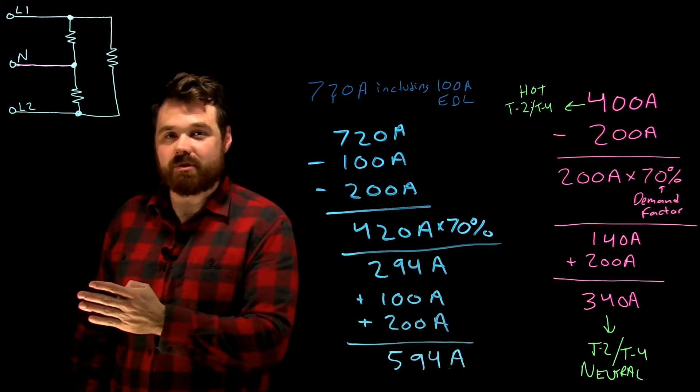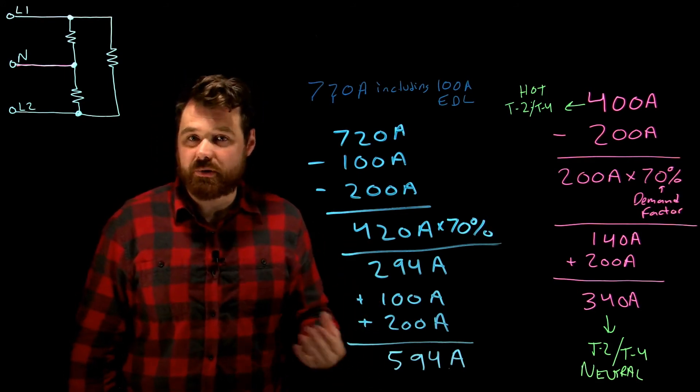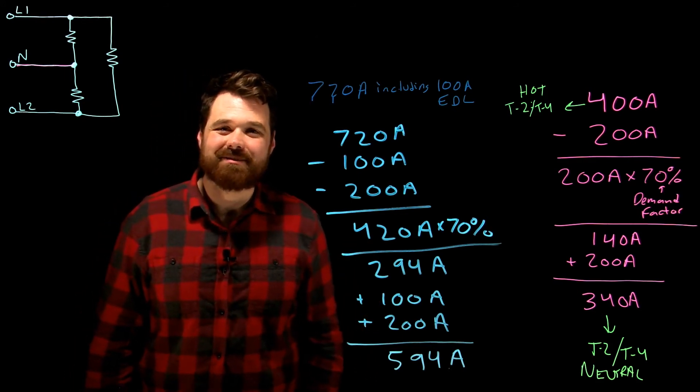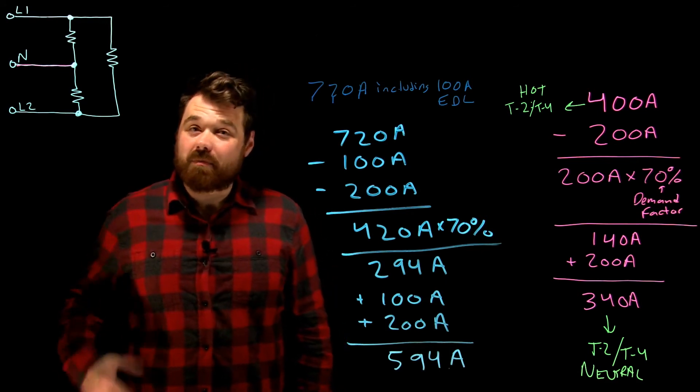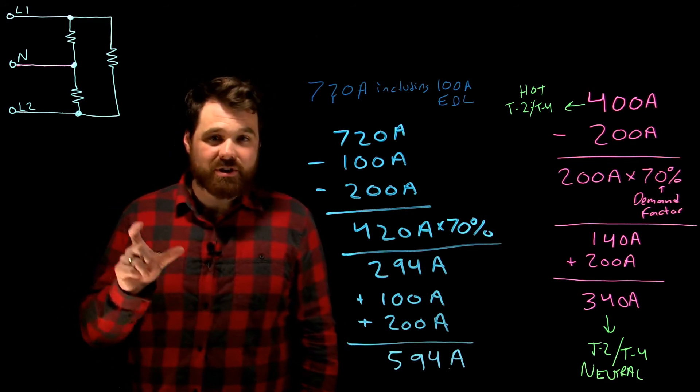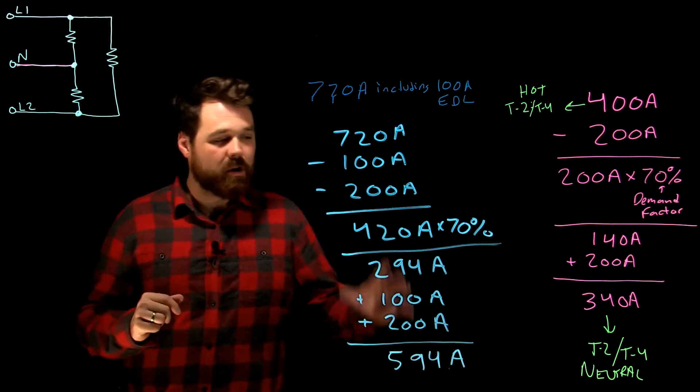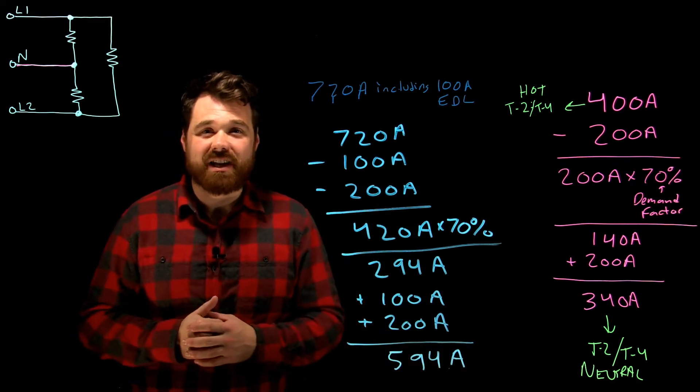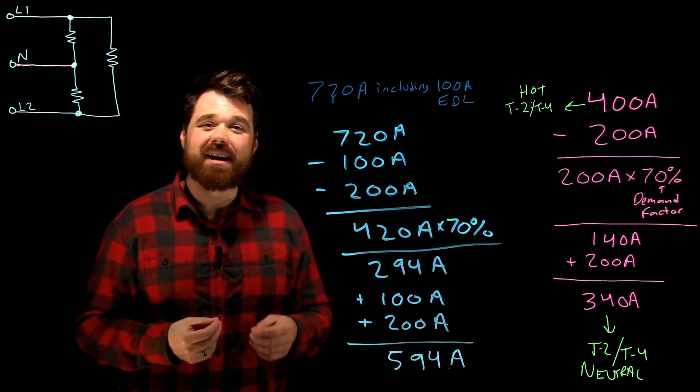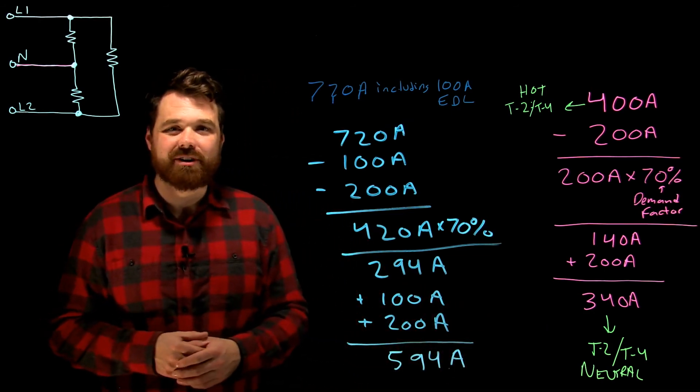And then of course, using tables 8, 9, and 10 to size my conduit because not all the conductors are the same size. Make sure you're referencing your code book for this. There's a couple other little sub rules that are going to come into play. But for the most part, this is your basic neutral sizing calculation to figure out the required ampacity of the neutral conductor. Thanks for watching.